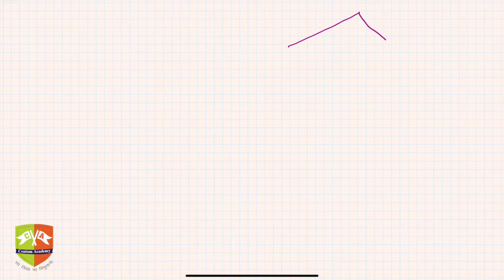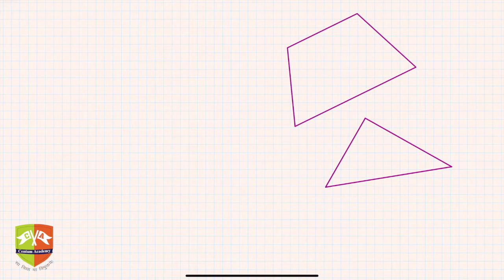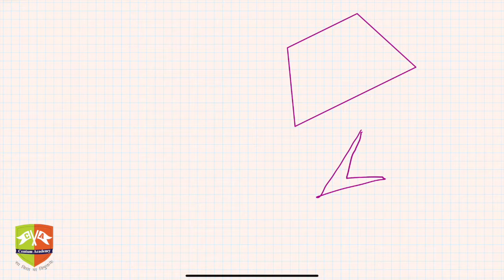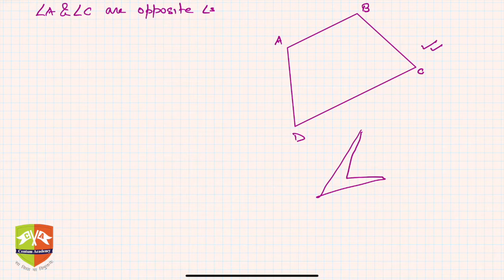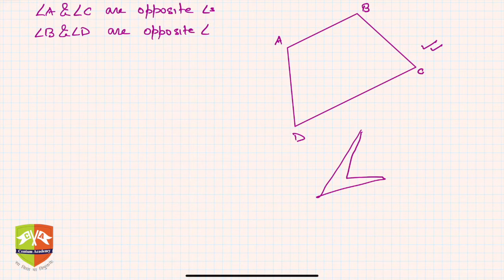Let me draw a quadrilateral — there could be a variety of quadrilaterals. The quadrilateral is named after its vertices, so ABCD is a quadrilateral. If you see, angle A and angle C are opposite angles. Similarly, angle B and angle D are a pair of opposite angles — angle A is opposite to angle C, and angle D is opposite to angle B.